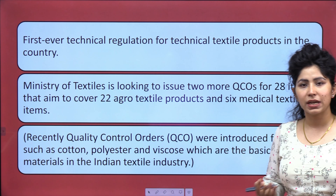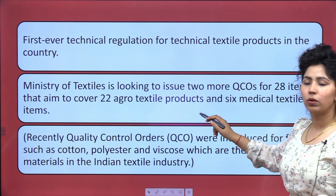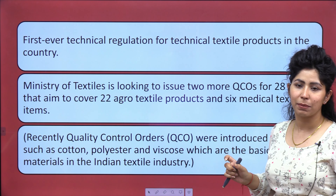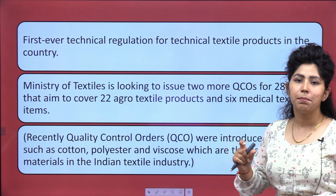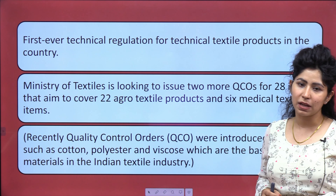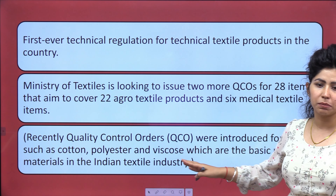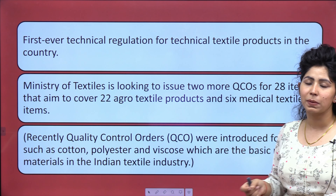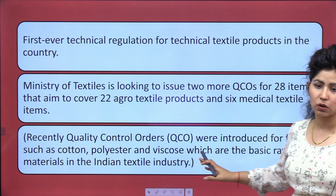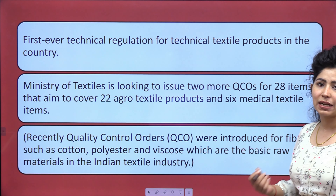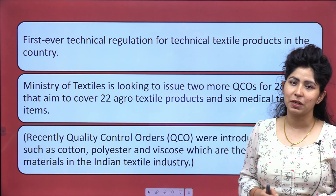The ministry is talking about bringing two more quality control orders covering 22 agro-textile products — technical textiles used in agriculture — and 6 medical textile items used in the medical industry. Recently, quality control orders were also introduced for fibers such as cotton, polyester, and viscose, which serve as basic raw materials for the textile industry.